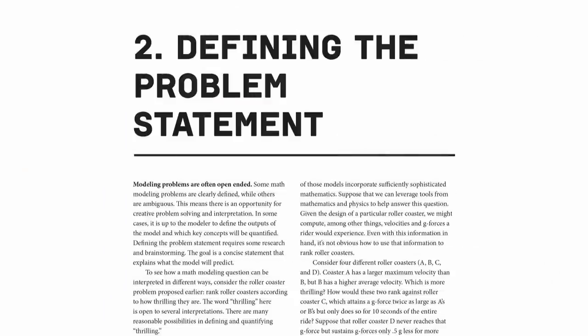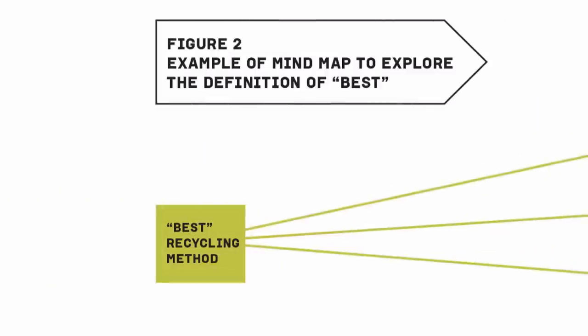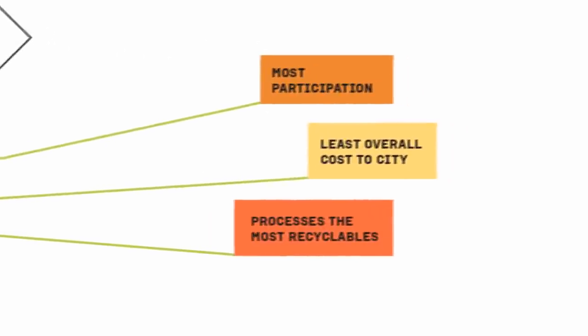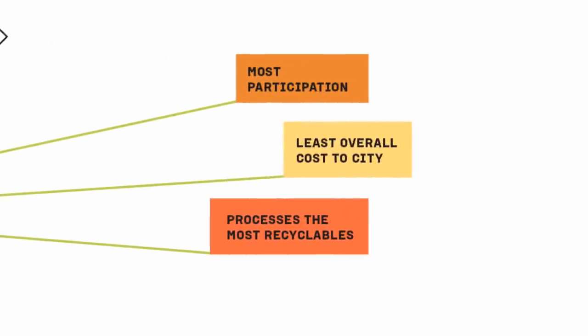The first step in developing a model is defining the problem being solved — figure out what question is being asked. I know that sounds simple, but a lot of times when you say 'I want the best way to do something,' you have to ask: what do you mean by best? Do you mean the cheapest way? The fastest way? What question are you really asking?